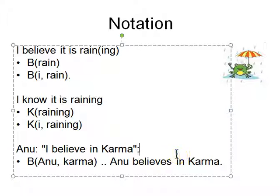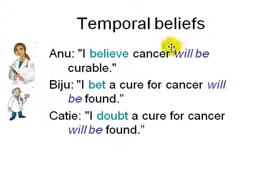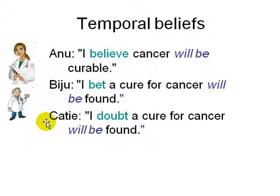Like 'I believe in karma' — so Anu says that. Anu believes in karma, and we still have to define what karma is and what belief is. And not only that — your belief can involve time. So Anu says 'I believe cancer will be curable.' Biju says 'I bet a cure for cancer will be found.' So what's the difference between believe and a person willing to bet? And Katie says 'I doubt a cure for cancer will be found' — again a belief, but a negative belief.